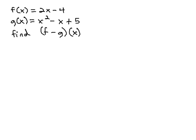We have f(x) = 2x - 4 and g(x) = x² - x + 5, and we're asked to find (f - g)(x).